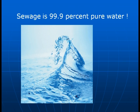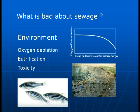What is bad about sewage? The main thing bad about it is its impact on the environment, which causes oxygen depletion, eutrophication, and toxicity. The drawing showing oxygen concentration versus distance down river from the discharge illustrates that as the sewage flows downstream, biodegradation will decrease the oxygen in the water, ultimately causing problems for fish to breathe in the water.